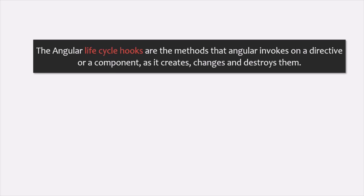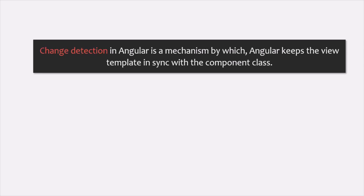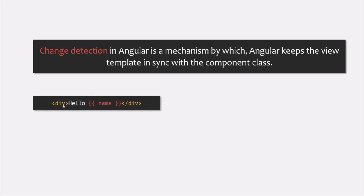Before we talk about ngOnChanges, let's briefly understand what the change detection cycle in Angular is and what it does. The change detection cycle is a mechanism by which Angular keeps the view template in sync with the component class. For example, if in the view we have a div with a literal text 'hello' and a name property using string interpolation syntax, whenever the value of that property changes, that change is immediately reflected in the web page.